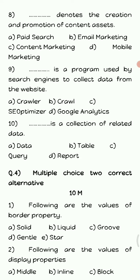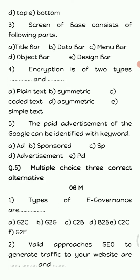Next, multiple choice questions with two correct alternatives. Following are the values of border property — the answer is 'solid' and 'groove'. Following are the values of display properties — the answer is 'inline' and 'block'. Screen of dBase consists of following parts — the answer is 'title bar' and 'menu bar'. Encryption is of two types — the answer is 'symmetric' and 'asymmetric'. The paid advertisement of Google can be identified with dash keyword — the right answer is 'sponsored' and 'Ad' (capital A, small d).